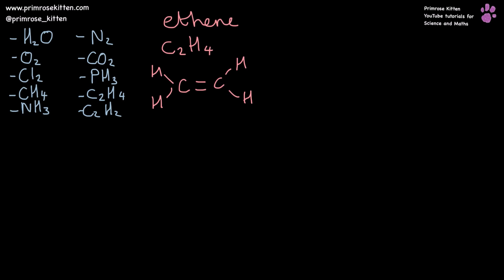Ethene. Now this is getting slightly complicated. Now we have carbon, carbon, double bond in the middle. So each carbon is donating two electrons to the middle. Carbon has four electrons on its outer shell.